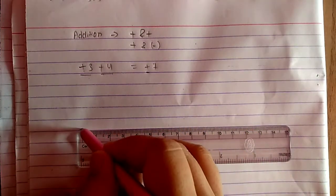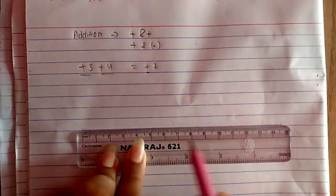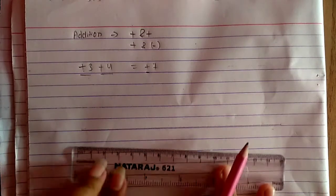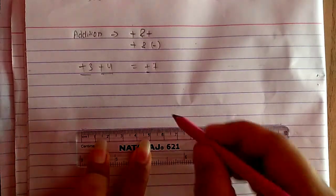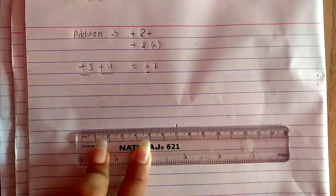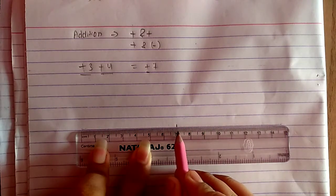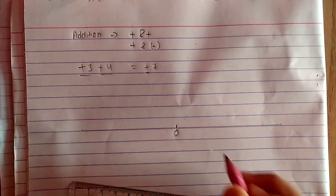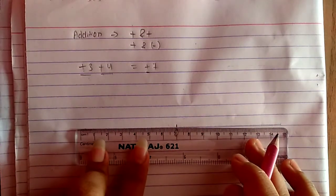Let me first draw a number line. For drawing a number line, I'll always use a scale. I'll mark at any point — you can see the direction I'm marking — and I'll mark here as zero. Zero is known as the point of reference.